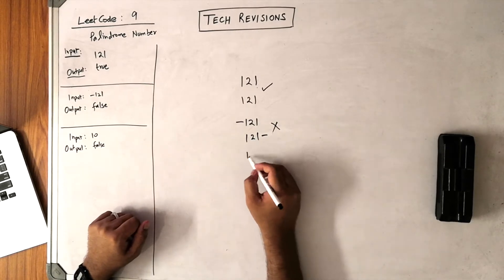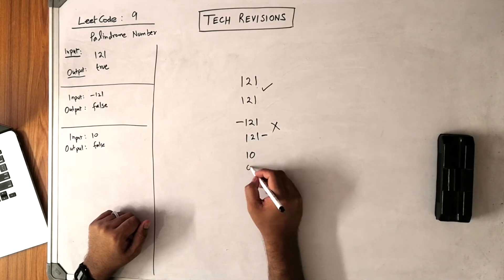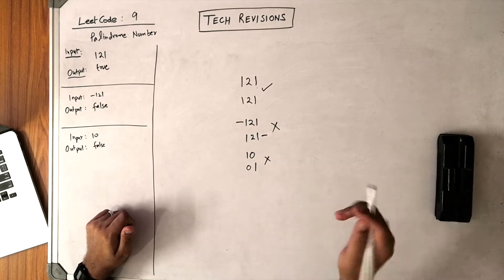Look at the final sample which is 10. When you read it from this side, it will become 01, and it is not a palindrome because these two values are not the same.